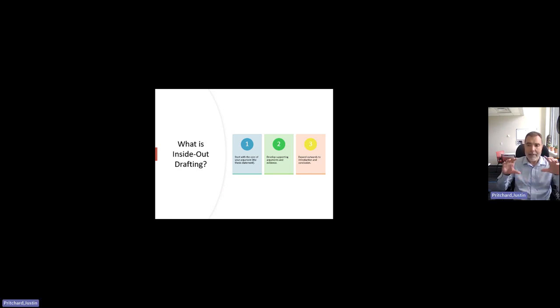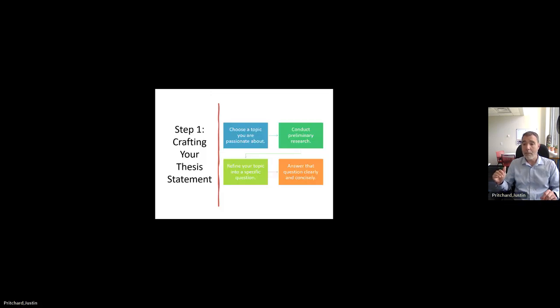Inside Out Drafting takes your thesis statement and gives you a way to understand what you have to address in your paper. It gives you a list of topics and a framework to develop your supporting arguments. And then eventually you add your intro and your conclusion. But for right now, all we're looking at is framing the skeleton of your paper. So what do you need to address? You're creating a list. What do I need to address if I'm going to effectively analyze or effectively explain the thesis statement that I've laid?